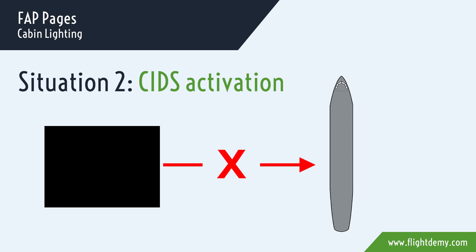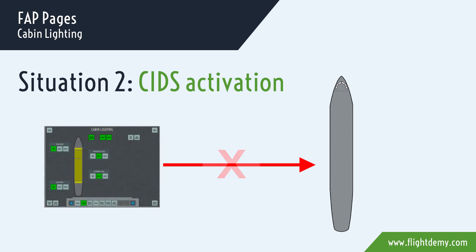Situation two: CIDS activation. This situation occurs in the first shift of the day. When the plane was off and is powered, the CIDS activates and all the lights illuminate with full brightness, except for lavatories that stay dimmed.